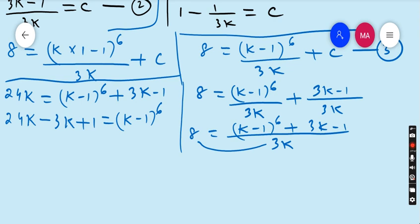This 3k shifted over there, this minus 1 shifted over there on the right hand side. So 24k minus 3k plus 1 equals (k - 1) to the power 6. That is 21k plus 1 equals (k - 1) to the power 6.